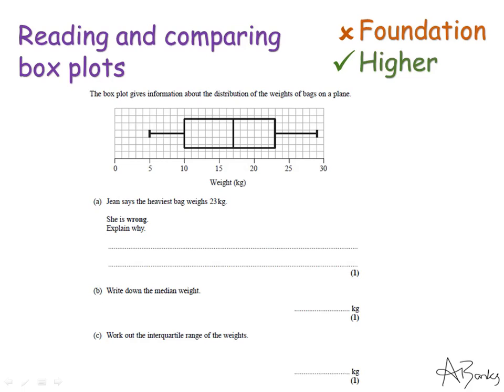So that last question covered comparing box plots. This one covers a little bit more on reading them. So this box plot is about the distribution of weights of bags on a plane. And the first question says Jean says the heaviest bag weighs 23 kilos. She is wrong, explain why. So again this is a simple question. If we look here this is the highest value recorded. So this is our heaviest bag.